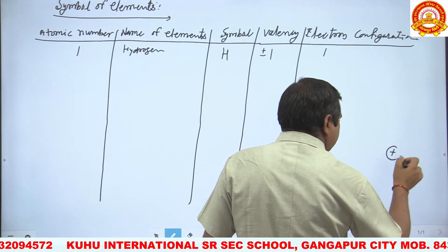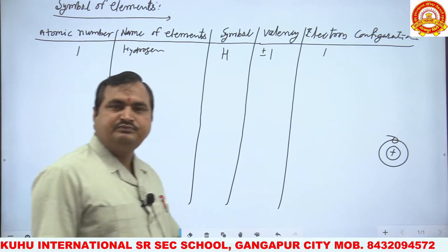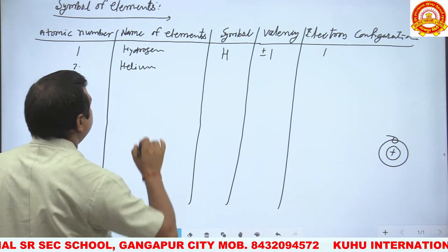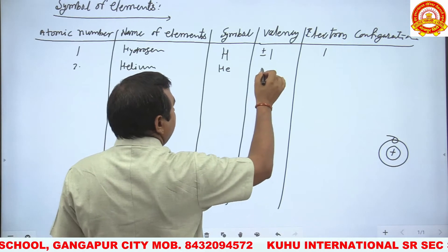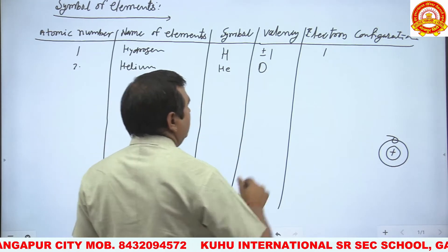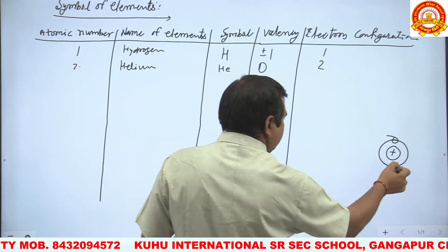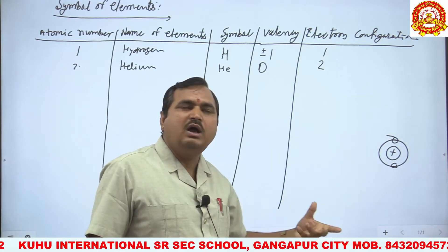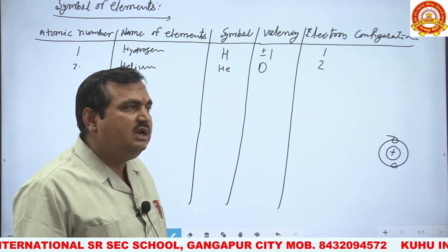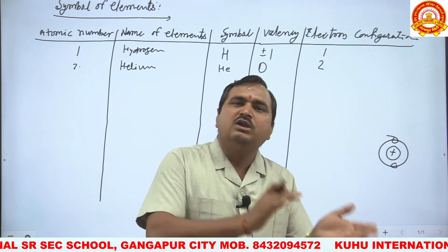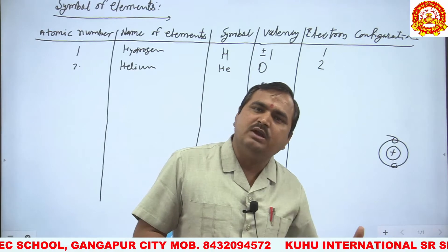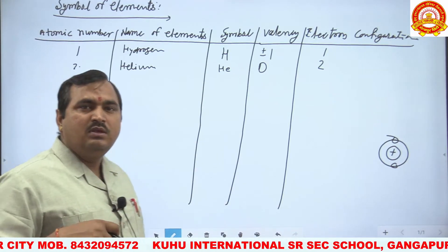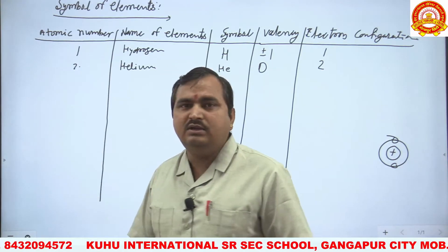Looking at the diagram: nucleus has positive charge, first orbit has 1 electron for hydrogen. For helium, first orbit is complete with 2 electrons. According to Bohr and Bury, electrons fill the orbits in a specific way — the outermost orbit is filled accordingly. Elements were named by Berzelius. The symbols of hydrogen and helium were given by Berzelius, but the concept of element symbols was first proposed by Dalton.